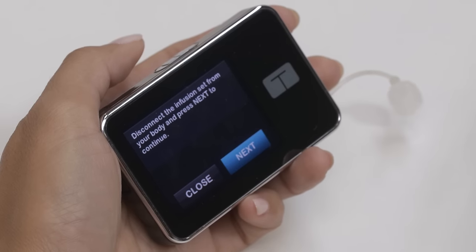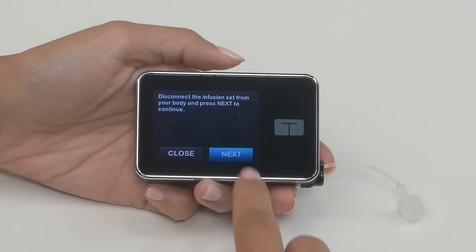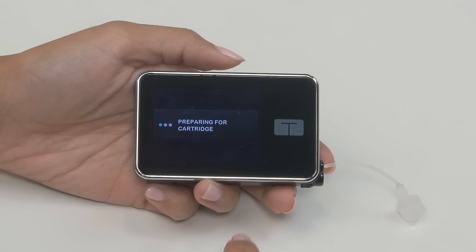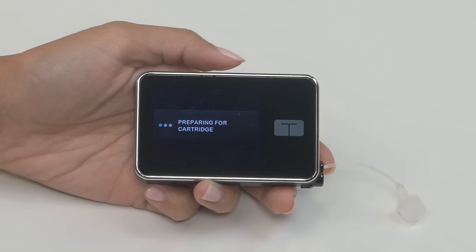Next you'll be prompted to disconnect your infusion set from your body. Tap next to continue. You should see the preparing for cartridge screen.